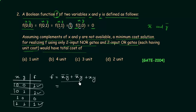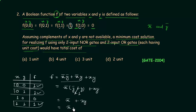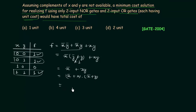From the first two terms, x complement is common, so we have x complement times (y complement or y) inside the bracket. y complement or y equals 1, so we have x complement or x y. By using the distributive law, I can write (x complement or x) and (x complement or y). x complement or x equals 1, so we have x complement or y. This is the minimized expression for f.